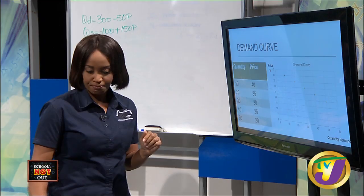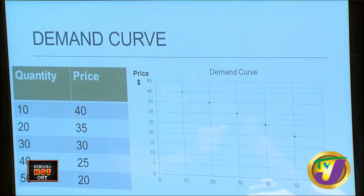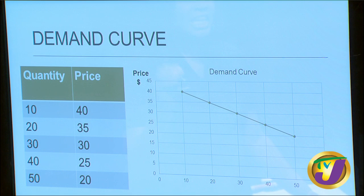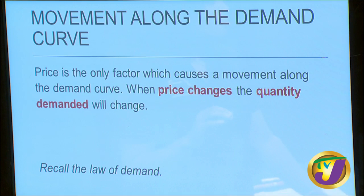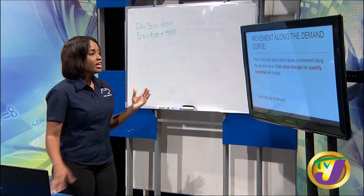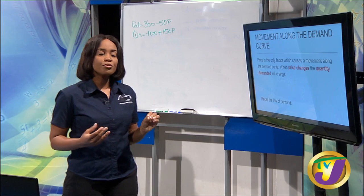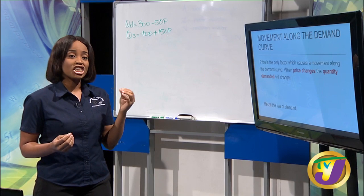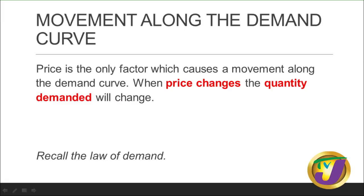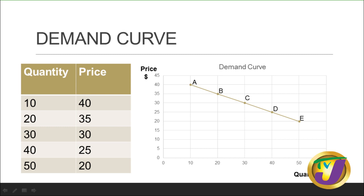Our demand curve slopes downward. It is very important to note that price is the only factor which causes a movement along the demand curve. Price simply shows that at different levels, the quantity demanded of the good is changing — if price decreases, quantity demanded increases, and vice versa. Points A, B, C, D, and E along the demand curve represent movements along the demand curve.